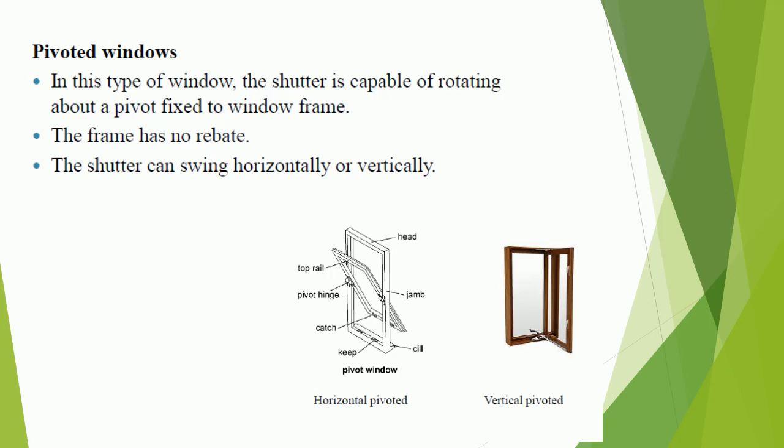Pivoted windows: in this type of window, the shutter is capable of rotating about a pivot fixed to the window frame. The frame has no rebate. The shutter can swing horizontally or vertically.